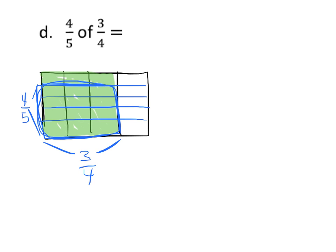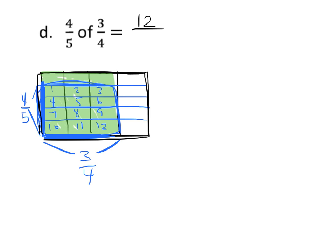So 4 fifths would represent all this piece right here. How many pieces do we have? We have 1, 2, 3, 4, 5, 6, 7, 8, 9, 10, 11, 12. That's actually pretty easy because we have 3 going left and right and 4 going up and down, so that's 12. So we have 12 little fractions that are 4 fifths of 3 fourths out of a total. Now we have to count the total — 5 going up and down, 4 going left and right, so that's 20 total. And we can see that can reduce — the numerator and denominator can both be divided by 4 — so our simplified answer would be 3 fifths.